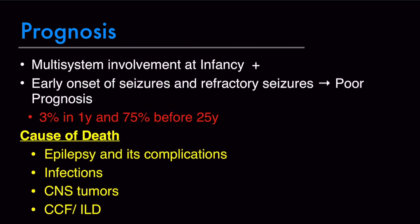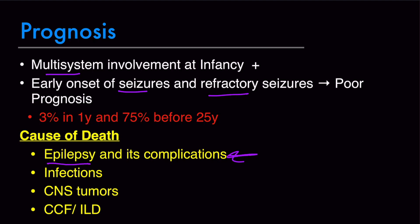If there is only skin involvement in tuberous sclerosis, the prognosis is good. However, multi-system involvement at an early age, early onset of seizures, and seizures refractory to treatment are all poor prognostic factors. Statistics show that 3% of patients with these conditions die in the first year of life, and 75% of patients with multi-system and CNS or seizure involvement die before 25 years of age. The number one cause of death in tuberous sclerosis is epilepsy and its complications, followed by infections, brain tumors, congestive cardiac failure, and interstitial lung disease.